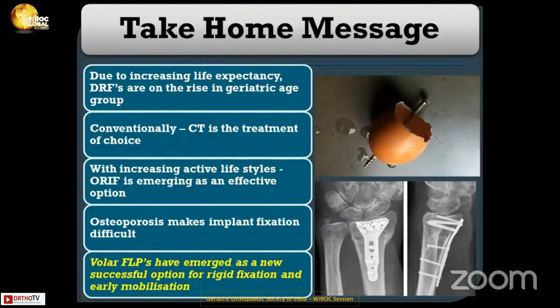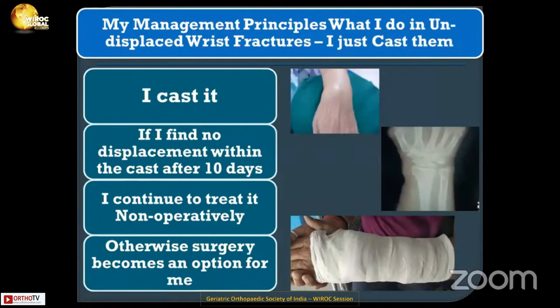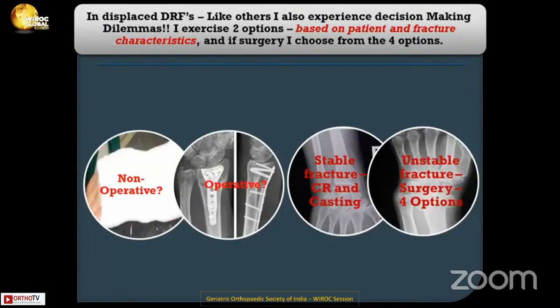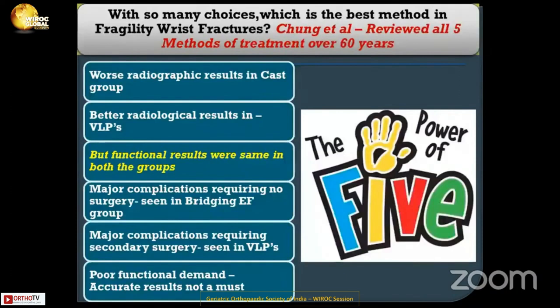Take-home message: due to increasing life expectancy, distal radial fractures are on the rise in the geriatric age group. Conventionally, close reduction and casting or close reduction and pinning remain treatment of choice. With increasing active lifestyle, open reduction internal fixation is emerging as an effective option. In undisplaced fractures, I just cast it. In mildly displaced fractures, I reduce it, and if there is no re-displacement within the cast after 10 days, I continue non-operative treatment; otherwise surgery becomes an option. In displaced distal radial fractures, I base my decision on patient and fracture characteristics.